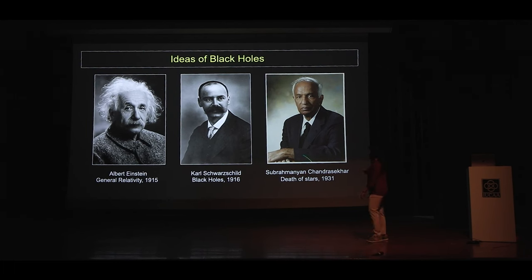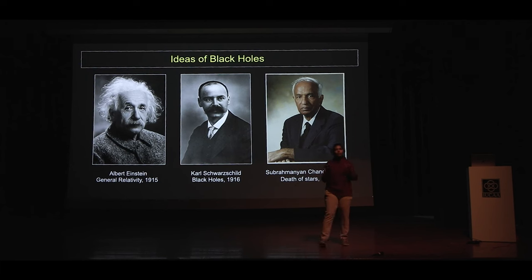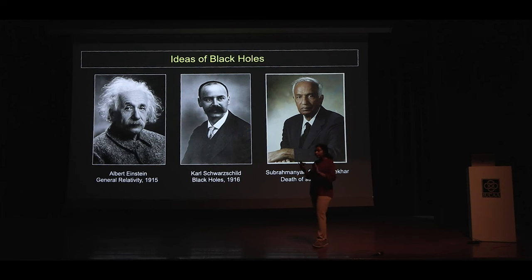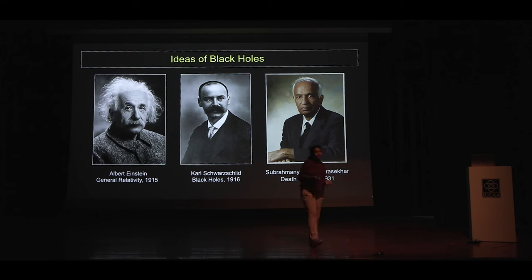A few more years later, another astronomer came into the scene: Indian-American astronomer Subrahmanyan Chandrasekhar. He worked in the field of how stars die, giving us scientific formulations of what could be the end stage of stars and how black holes may form. Even at that time, these ideas were revolutionary. The famous astronomers of the time ridiculed his ideas quite a lot. But he stuck to his point that this is what the math is showing. And many years later, in 1983, he would go on to win the Nobel Prize for these calculations.